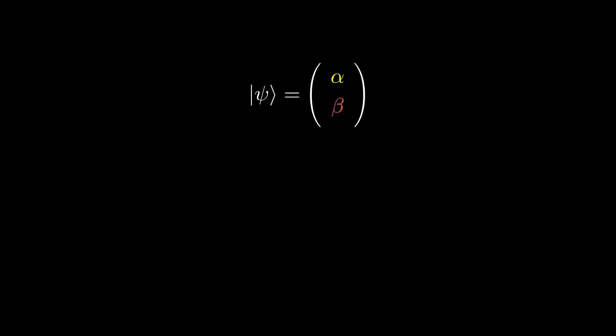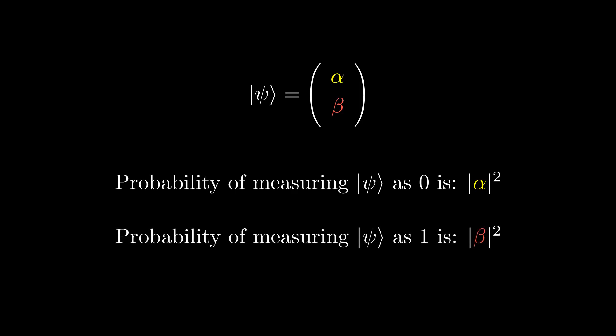What those numbers tell us is the probability of measuring a zero or a one. The probability of measuring zero is the magnitude squared of the amplitude of the zero state, and the probability of measuring one is the magnitude squared of the amplitude of the one state.